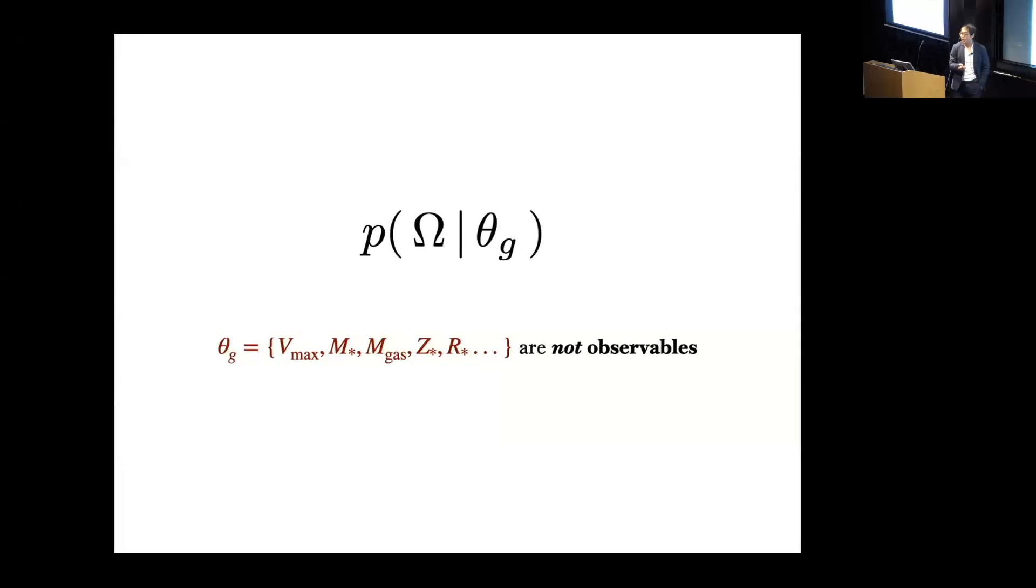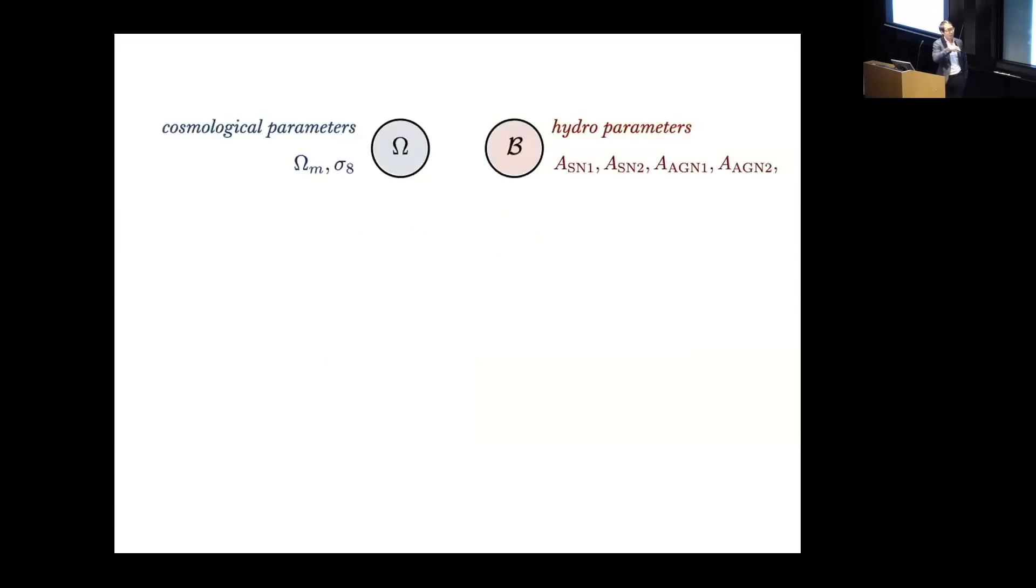Despite this nice demonstration, one of the main challenges that we have faced when trying to apply this to actual practice is that the galaxy properties I've mentioned are not observables of galaxies. So the question still remains: can we constrain cosmology with actual observables like photometry or spectra of just a single galaxy?